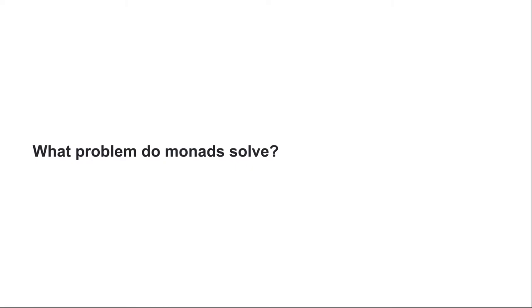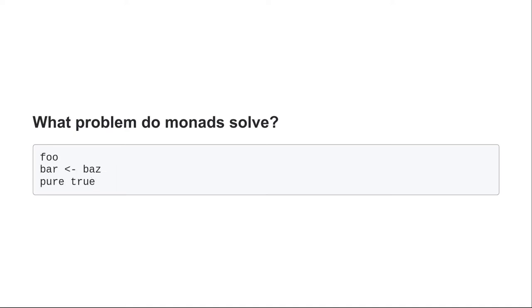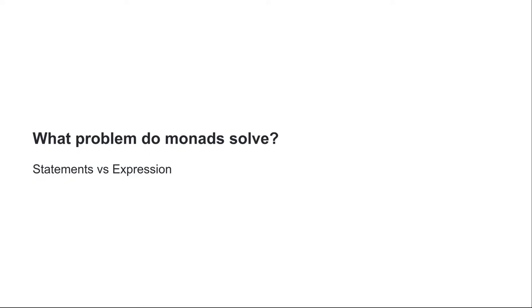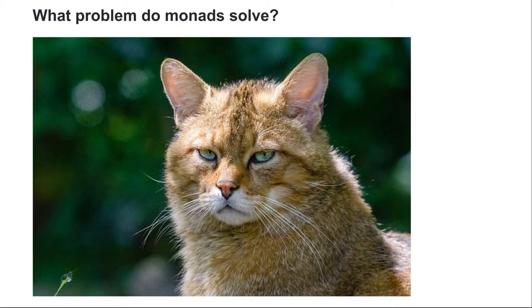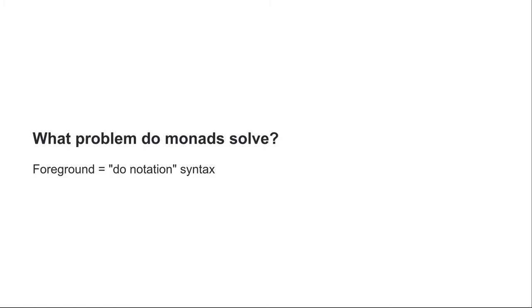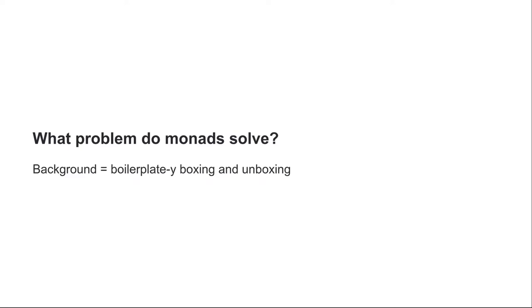What problem do monads actually solve? We have this in JavaScript, but in PureScript we write this — the difference being between a procedural statement and an expression we can evaluate. I want to introduce the analogy of the foreground and the background. For example, we have a picture of a cat. The foreground is the actual cat — it's what we care about. The background still has context that's important, but we're not really focusing on it. Similarly, with monads, the foreground is the do notation syntax: what we see, read, and write. The background is the bind implementation — the stuff we don't care about, but it's still very important. In the foreground we have the appearance of sequential computation, and in the background a whole bunch of boxing and unboxing boilerplate we don't have to do ourselves.